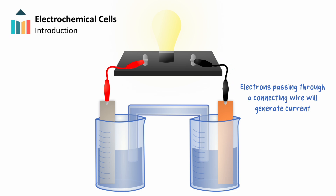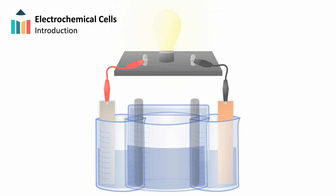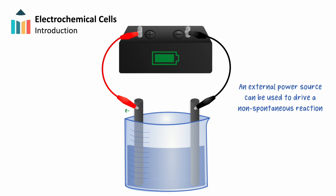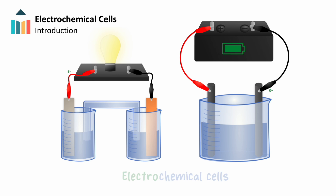Or, we could do the opposite — we can use electrical current supplied by a power source, such as a battery, to drive a redox reaction that is otherwise non-spontaneous. In these two examples, we have constructed what are called electrochemical cells.